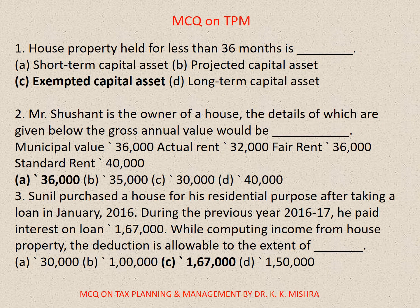Question number 1: House property held for less than 36 months is — A. Short-term capital asset, B. Projected capital asset, C. Exempted capital asset, D. Long-term capital asset. Correct option is C: Exempted capital asset.